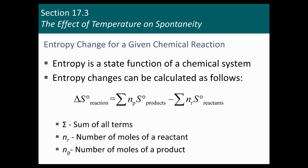Delta S of the universe equals delta S of the system plus delta S of the surroundings. We just decided that what determines delta S of the surroundings is negative delta H over T — whether it's endo or exothermic and what temperature you're at. Now we have to analyze delta S of the system. Delta S of the system — we try to predict its sign. When you have solids that go to gases, the entropy of the system goes up. When you mix a salt with water, the entropy of the system goes up.